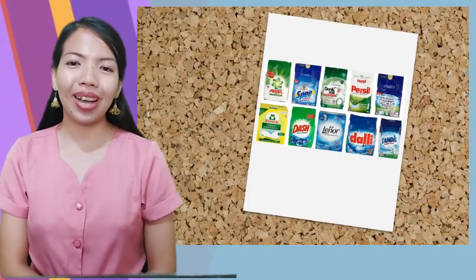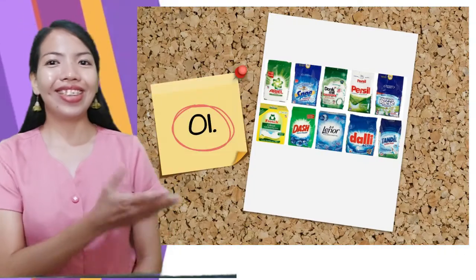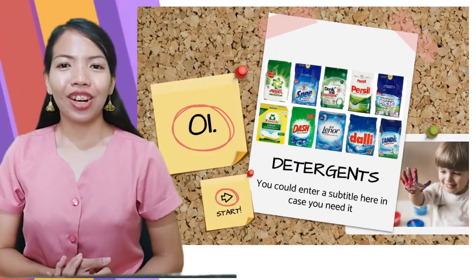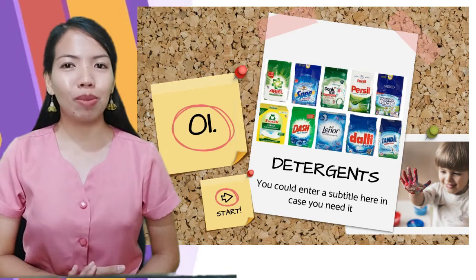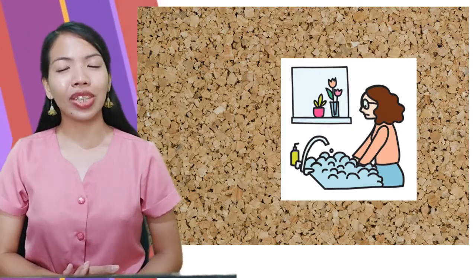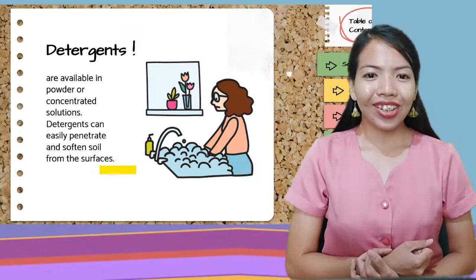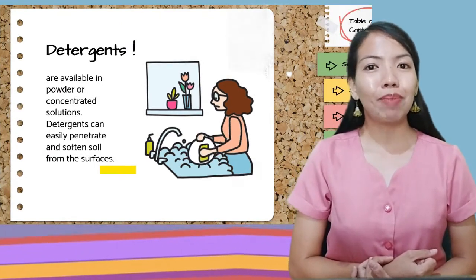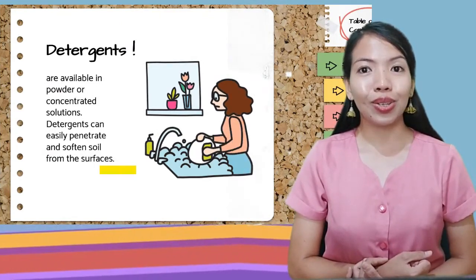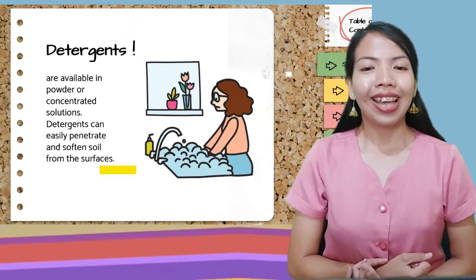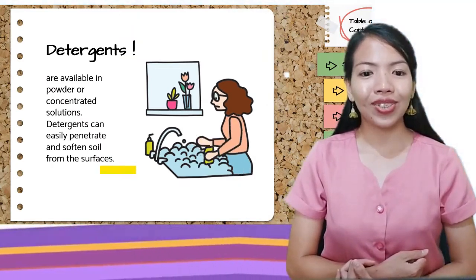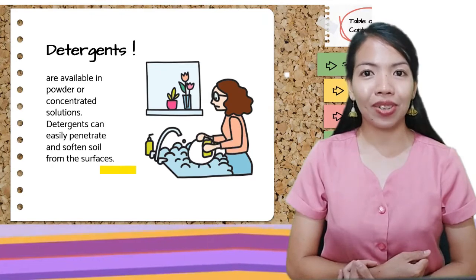We are now going to identify the four types of chemical sanitizers. Number one, we have detergents. Detergents are used to remove the visible or physical soil or dirt from surfaces. They are available in powder or concentrated solutions and can easily penetrate and soften soil from surfaces.